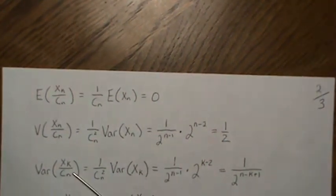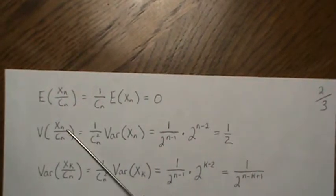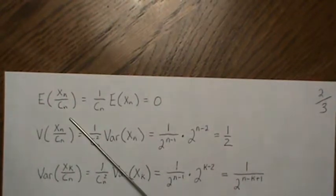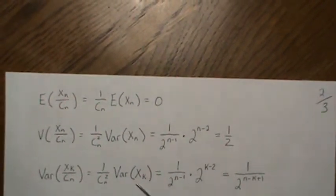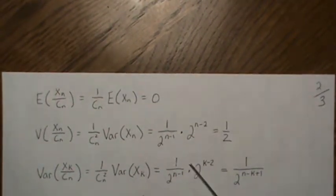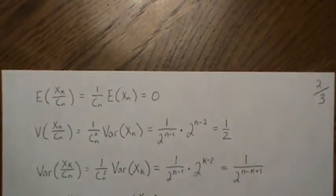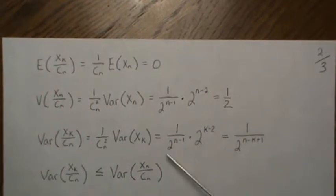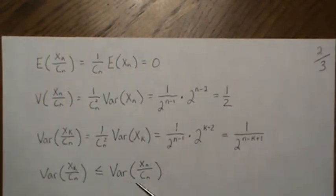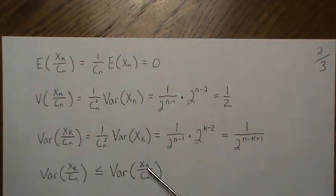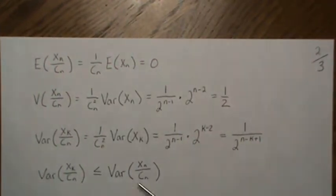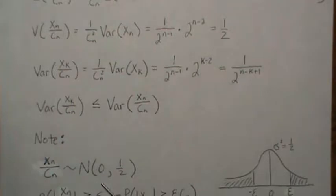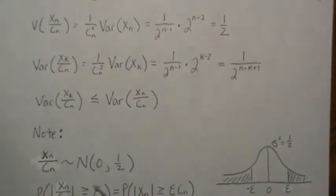Now looking at the kth term for k less than or equal to n: bringing out the constant, the variance of Xk is 2^(k−2), which gives 1/2^(n−k+1). One key note is that the variance of any term k ≤ n is always less than or equal to the variance of the last term Xn. This will play a part later. So Xn/Cn is a Normal(0, 1/2) random variable.